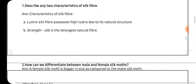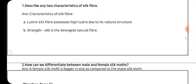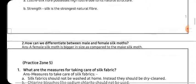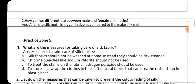Next is: describe any two characteristics of the silk fiber. Those characteristics you can write like — lustre is very high. It is having high lustre, and also it is very strong. It is the strongest natural fiber. Also you can write that it is having a hygroscopic nature — it absorbs moisture.